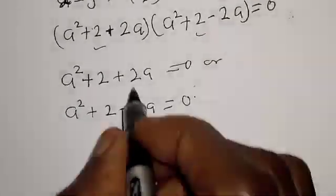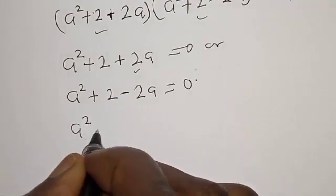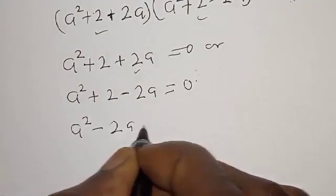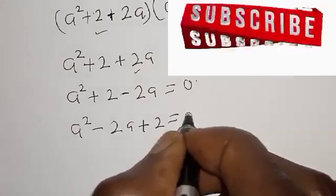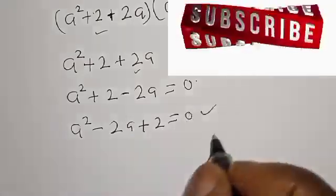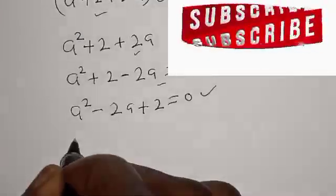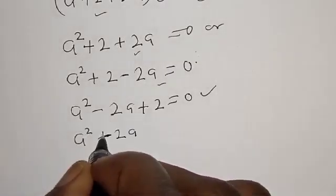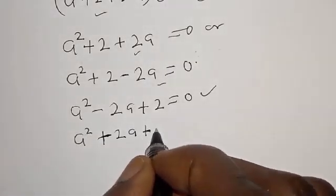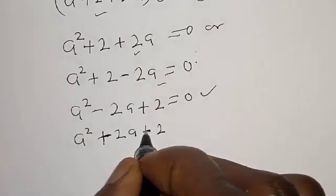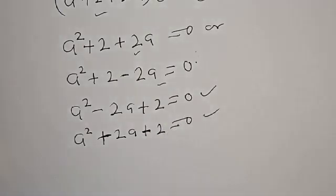Let's rearrange. We have a squared minus 2a plus 2 is equal to 0 — this is a quadratic equation for the first case. And a squared plus 2a plus 2 is equal to 0 — this is also a quadratic equation. We have two cases now.